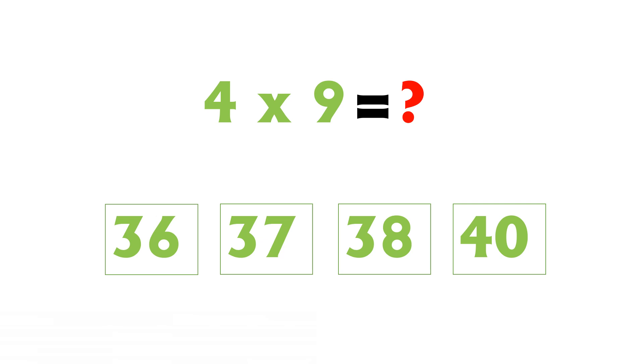4 nines are what? The options we have 36, 37, 38, and 40. The answer is... 4 nines are 36. 6 multiplied by 8 means 6 eights are...